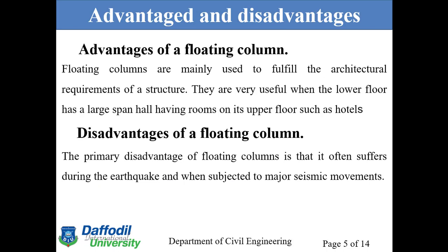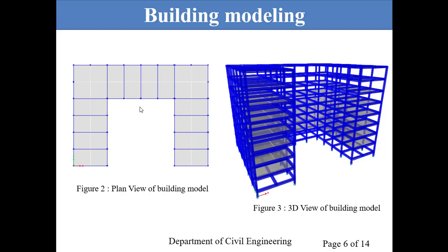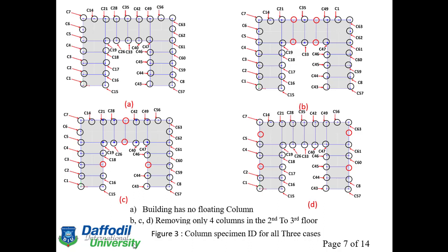For building modeling, Figure 2 shows the plan view and Figure 3 shows the 3D view of the building model. This is an 8-story building with 24 by 24 meters in plan, with columns spaced at 4 meters center to center and a floor-to-floor height of 3 meters. In Figure 3, columns are identified by ID. Circular black color indicates normal columns; circular red color indicates floating columns. Figure A shows the building with no floating columns, while Figures B, C, and D show cases removing all 4 columns in the second to third floor.